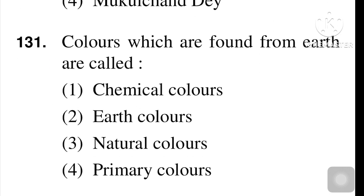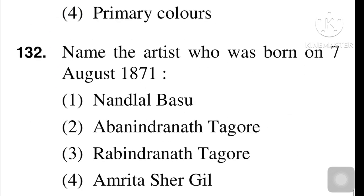Next question: colors which are found from earth are called — chemical colors, earth color, natural color, or primary color? The answer is earth color. You can also share your view in the comment section about this question.